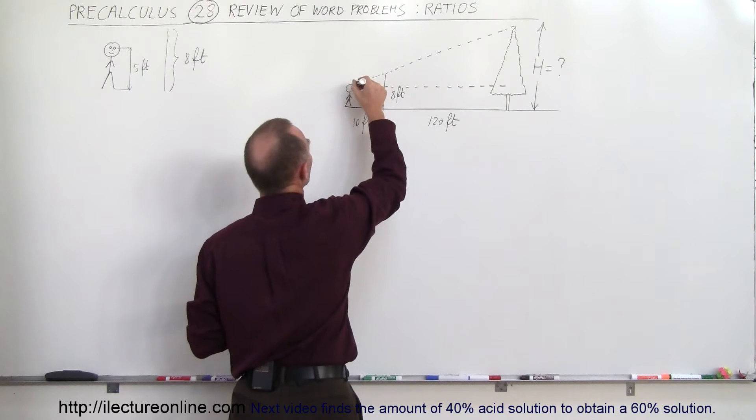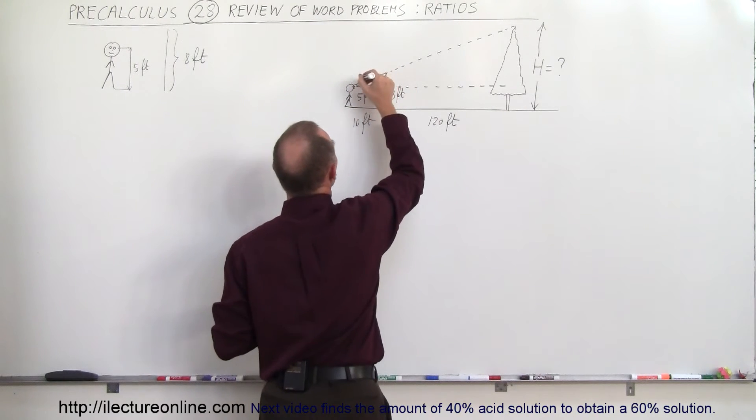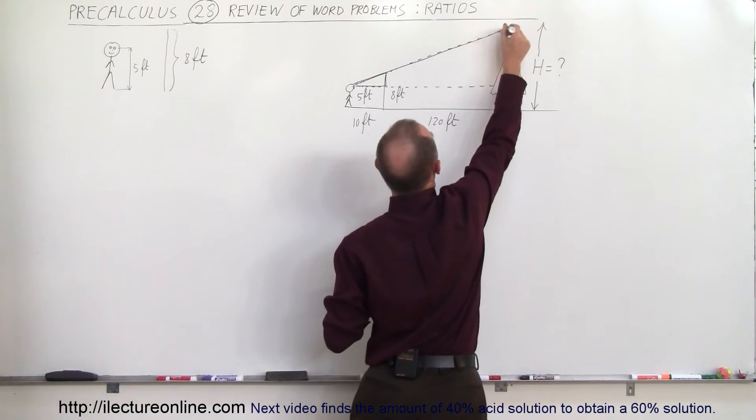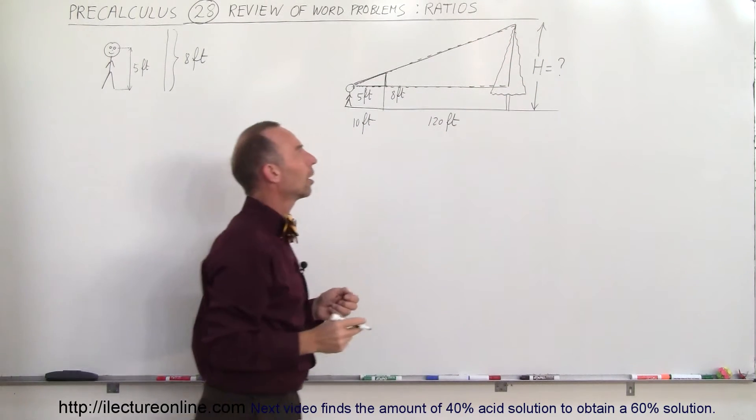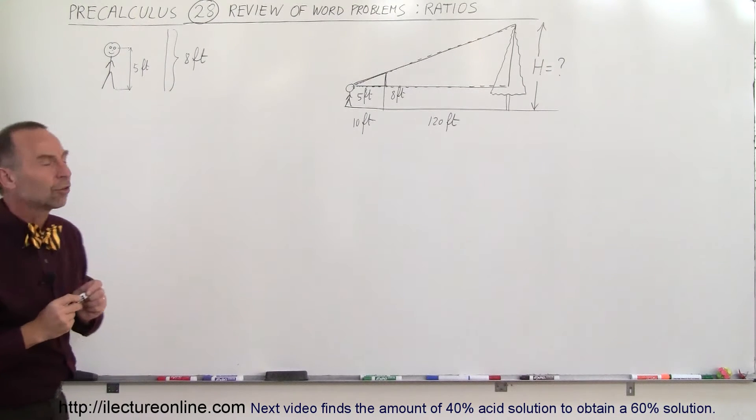We have the small triangle which is this triangle right here, and we have the big triangle which is this triangle right here, and those are congruent as we call it.